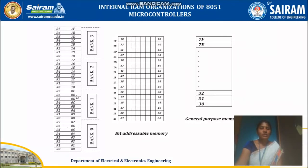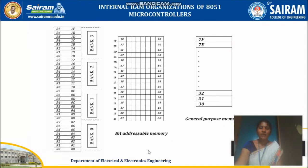Bank 1 starts from address 08H and ends at 0FH. Bank 2 goes from 10H to 17H. Whatever I am saying now are the addresses of register bank 0, register bank 1, register bank 2, and register bank 3. The bit addressable area can be accessed bit by bit — you can set bit or clear bit using those instructions. The byte addressable area is your general purpose RAM of 80 bytes, starting from address 30H and ending at 7FH.